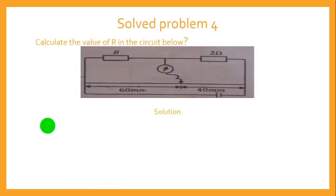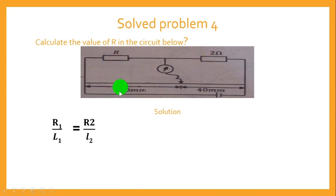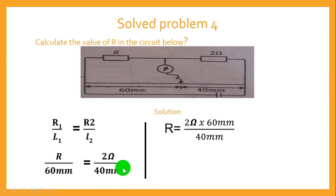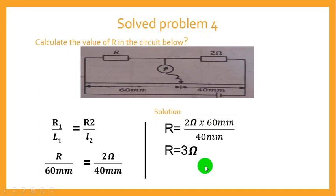The fourth question: Calculate the value of R in the meter bridge circuit. Using the formula, we have R divided by 60 equals 2 divided by 40. Making R the subject: R equals 2 times 60 divided by 40. The millimeter units cancel, leaving ohms, and the final answer is R equals 3 ohms.